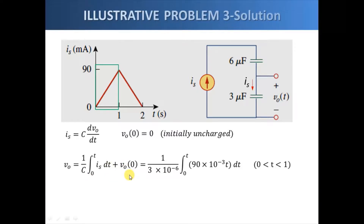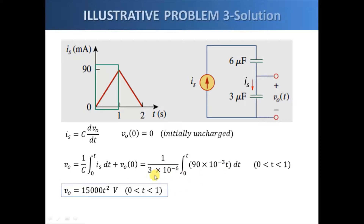We use the formula for voltage: the accumulated charge plus whatever initial voltage the capacitor has. First we identify the function i_s between zero and one second — it is a straight line given by 90 times 10 to the minus 3 times t. Substituting into the integral and solving, we get the voltage across the three microfarad capacitor between zero and one second.